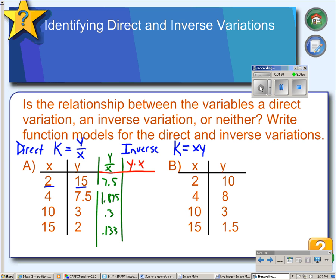For example a, when I divided each of the pairs, y divided by x, you can see I got different answers each time. So it is definitely not a direct variation equation. So now I'm going to check for inverse.